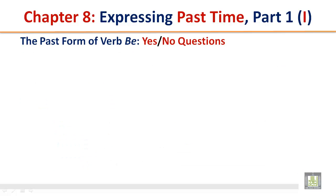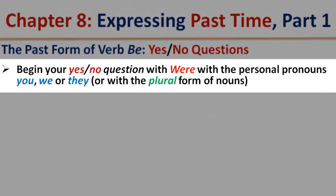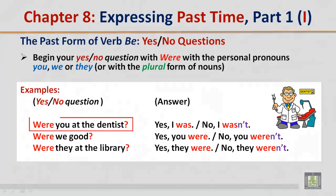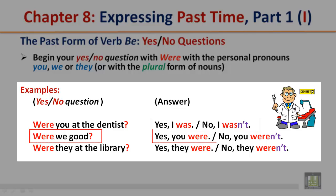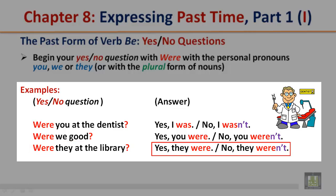The past form of verb be — yes or no questions continued. Begin your yes or no question with 'were' with the personal pronouns you, we, or they, or with the plural form of nouns. Examples: Were you at the dentist? Yes, I was. No, I wasn't. Were we good? Yes, we were. No, you weren't. Were they at the library? No, they weren't. Yes, they were. Notice: 'were' goes before the personal pronouns you, we, or they.